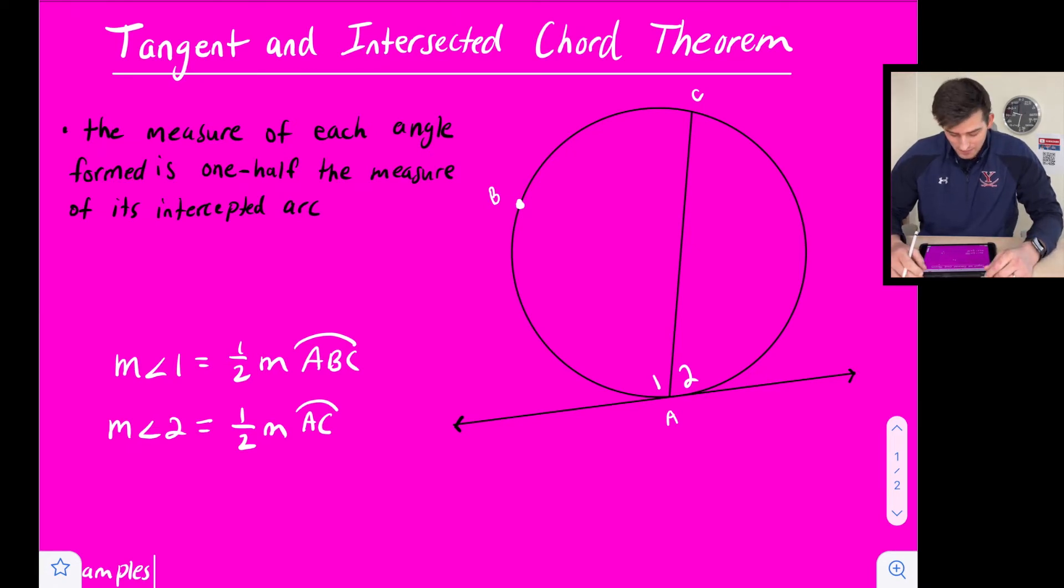So in black here we have what this theorem tells us. It says the measure of each angle formed is one half the measure of its intercepted arc.